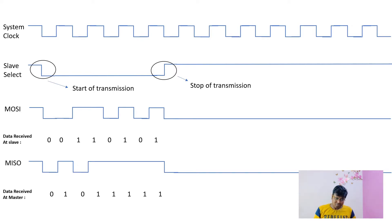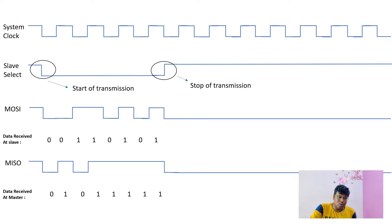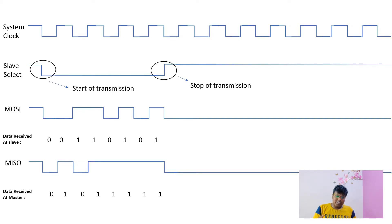The third waveform is Master Output Slave Input (MOSI), which is used to send data to the slave. As shown in the timing diagram, when the Slave Select pin is pulled from high to low, the data sent to the slave is 00110101, and it ends when the pin is pulled back to high. Similarly, the Master Input Slave Output (MISO) pin sends data back to the master, with the same Slave Select pin behavior controlling the start and stop of that transmission.